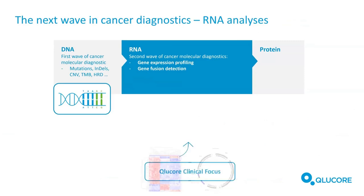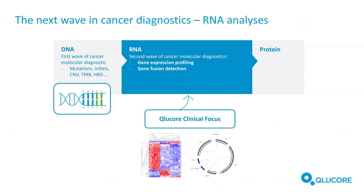Klukor focuses on RNA-seq analysis because there are plenty of companies that have developed DNA workflows — that's the first wave of cancer molecular diagnostics. Klukor's focus is RNA, where we can do gene expression profiling and gene fusion detection by RNA sequencing of mRNA.